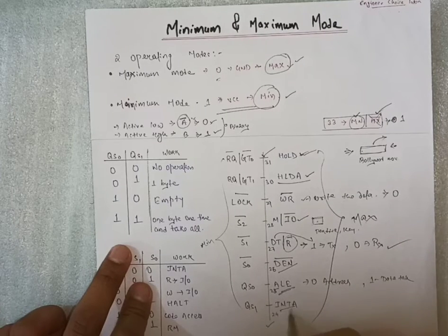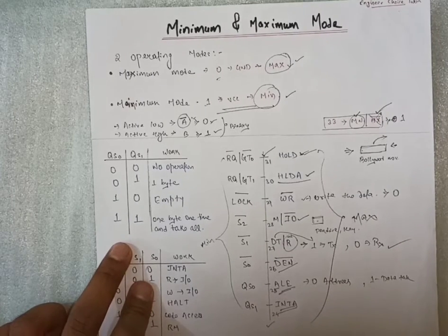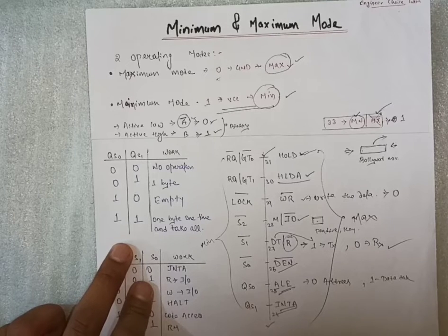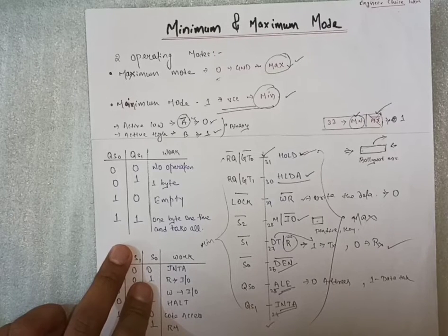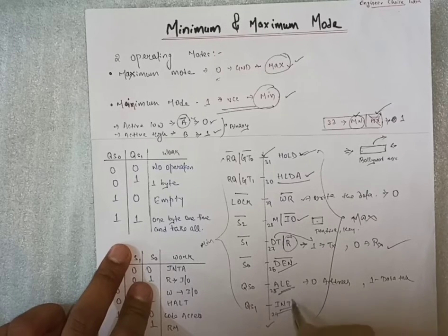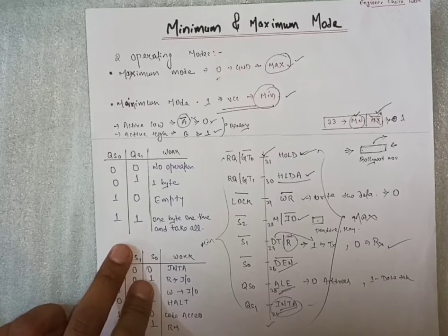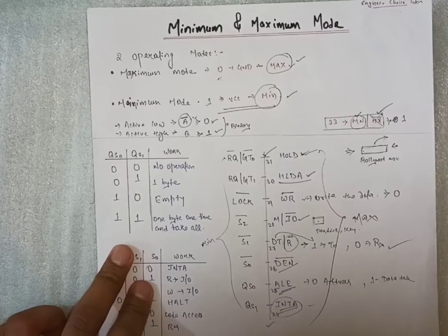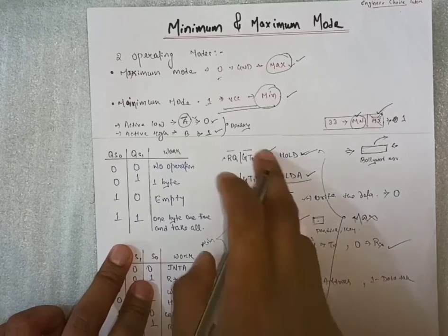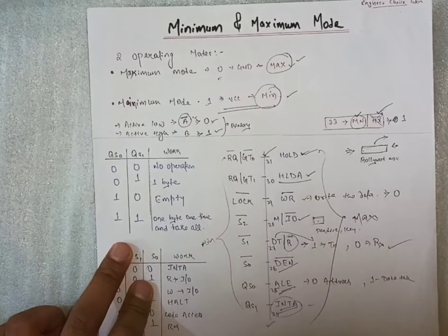After that, interrupt acknowledgement. We have seen in previous video that interrupt means some interrupt came for acknowledging that. That's all about our maximum mode.